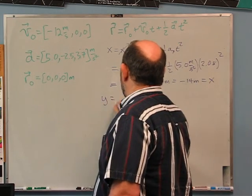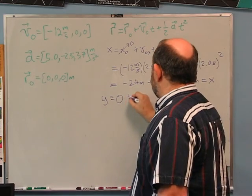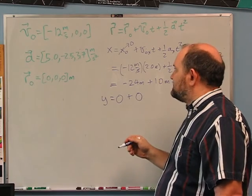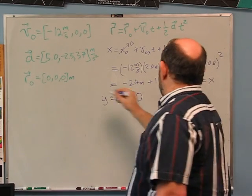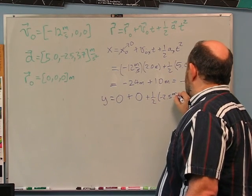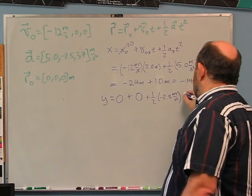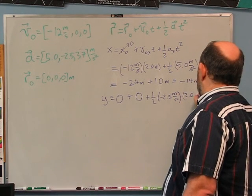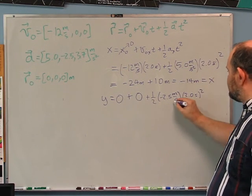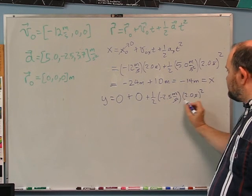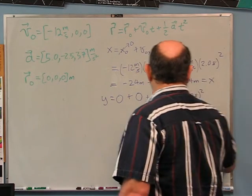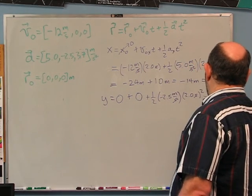For y: y = y₀ + v₀ᵧt + ½aᵧt². y₀ = 0, v₀ᵧ = 0, so those terms vanish. aᵧ = -2.5 m/s² and t = 2.0 s. ½ times (2²) = 2, times 2.5 gives 5.0. So y = -5.0 meters.